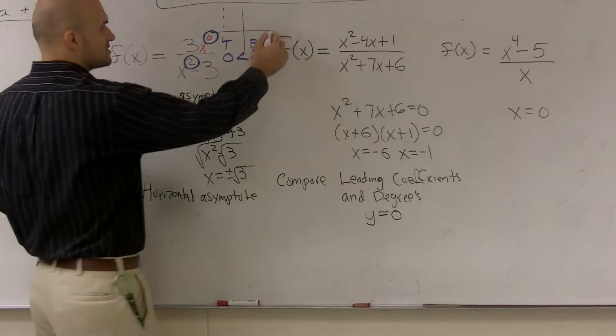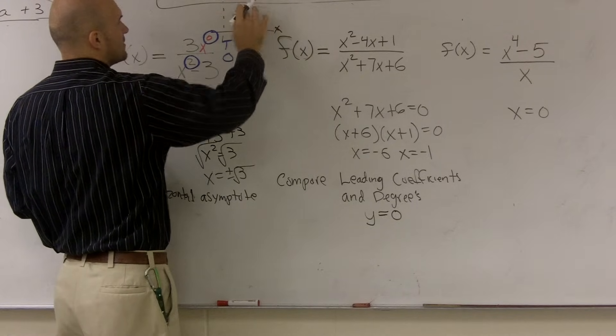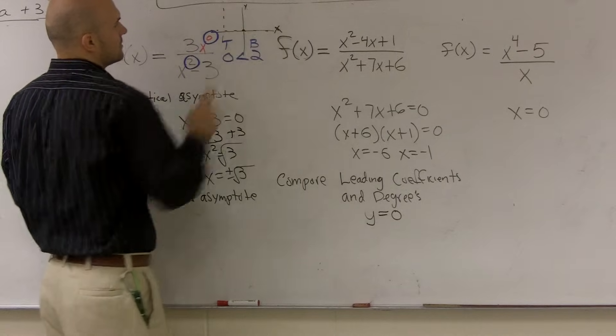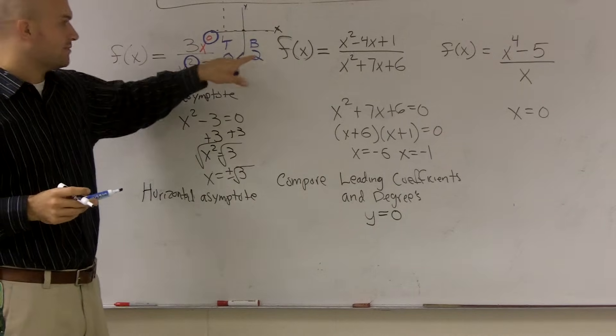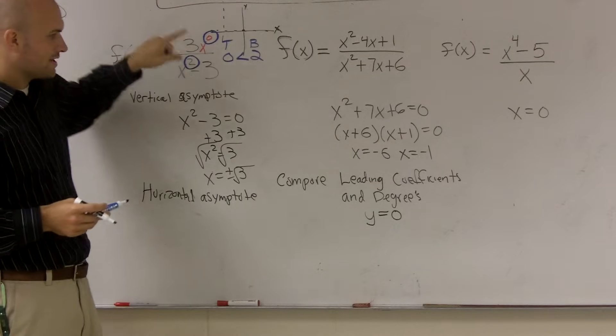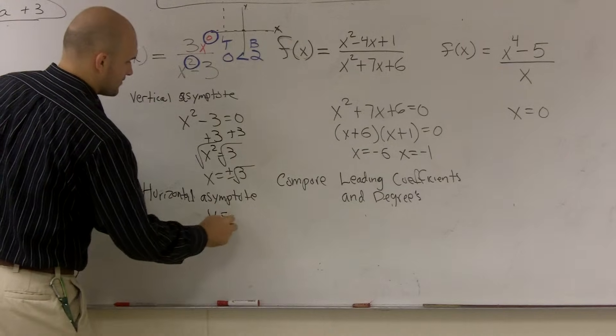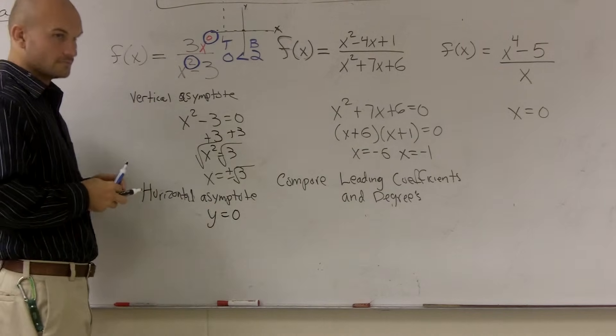And I'm saying y because this is your y-axis and that's your x-axis. So my y values can equal 0. So whenever your top degree is less than your bottom degree, your leading coefficient, y is equal to 0.